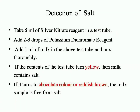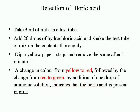Detection of salt in milk: take 5 ml of silver nitrate reagent in a test tube, add 2–3 drops of potassium dichromate reagent, then add 1 ml of milk and mix thoroughly. If contents turn yellow, milk contains salt. If it turns chocolate or reddish-brown, the milk sample is free from salt.